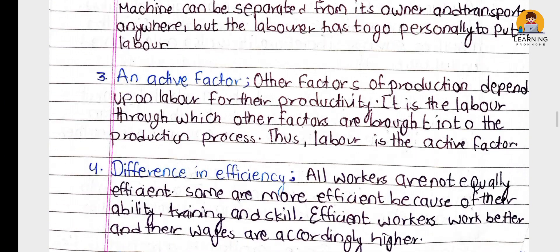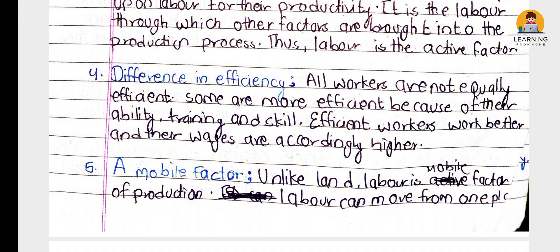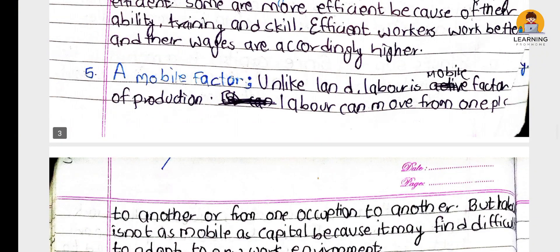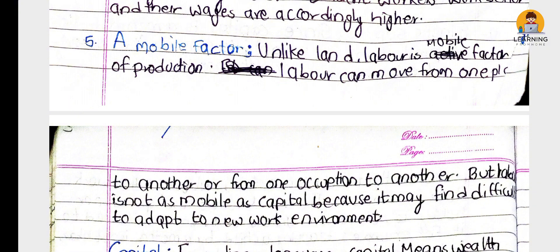Labor is an active factor of production. The entire production process depends on labor. Labor can utilize and maintain other factors of production. Additionally, labor is a mobile factor — labor can move from one place to another or from one occupation to another.